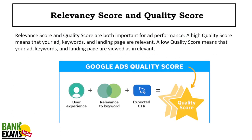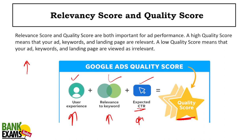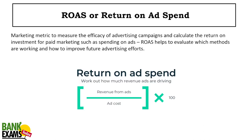Relevancy Score and Quality Score: on Google's ad platform, a higher quality score means your ad will rank higher. Quality score is calculated based on three factors: user experience on your landing page, relevance to keywords, and expected CTR. If your expected CTR is high, your keywords are relevant, and your website is fast with good readability, your quality score will be higher.